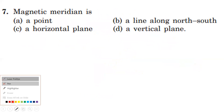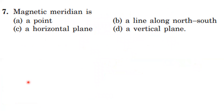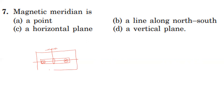Next question: magnetic meridian. In a magnetic meridian, the magnet is freely suspended. If the magnet is freely suspended, it aligns in a particular direction — this is the magnetic axis. The vertical plane passing through the axis of the freely suspended magnet defines the magnetic meridian.